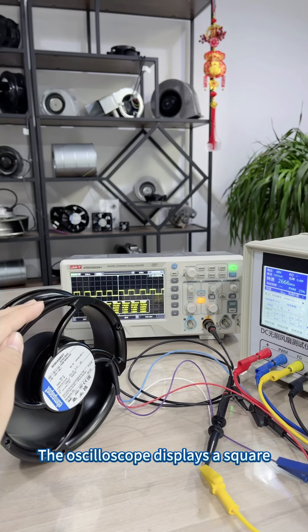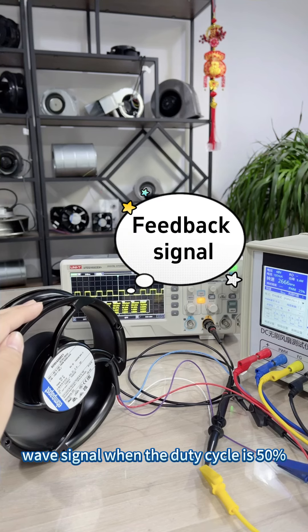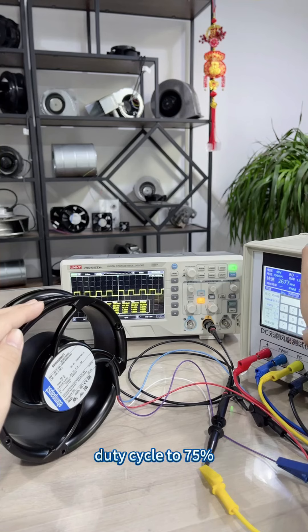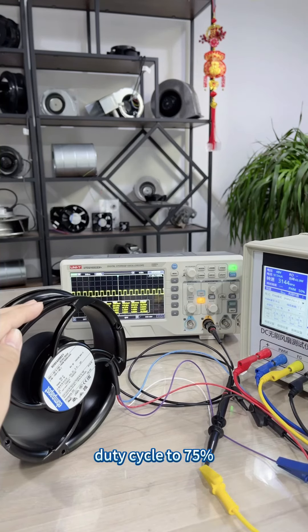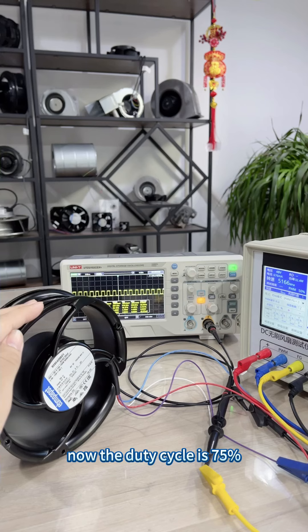The oscilloscope displays a square wave signal at 50% duty cycle. Now, we adjust the duty cycle to 75%. The fan speed reaches 7500 RPM.